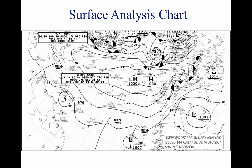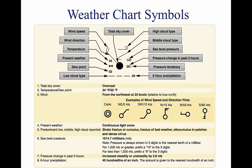The surface analysis chart depicts an analysis of the current surface weather. This chart is a computer-prepared report transmitted every three hours and covers the contiguous 48 states and adjacent areas. A surface analysis chart shows areas of high and low pressure, fronts, temperatures, dew points, wind directions and speeds, local weather, and visual obstructions. Surface weather observations for reporting points across the United States are also depicted on this chart, each illustrated by a station model.